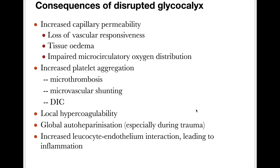When the glycocalyx gets damaged, there is increased capillary permeability, leading to loss of vascular responsiveness, interstitial edema and tissue edema, with impaired microcirculatory oxygen distribution. Due to exposure of endothelial cell adhesion molecules, platelet aggregation and adhesion occur, leading to microthrombosis, microvascular shunting and DIC formation. There is also local hypercoagulability and global auto-heparinization, and increased leukocyte-endothelium interaction leading to inflammation.